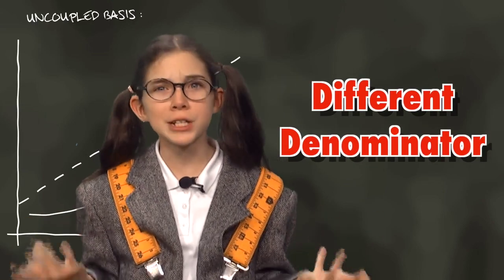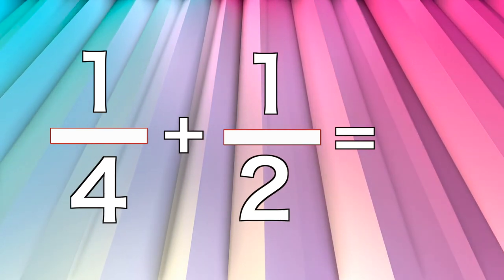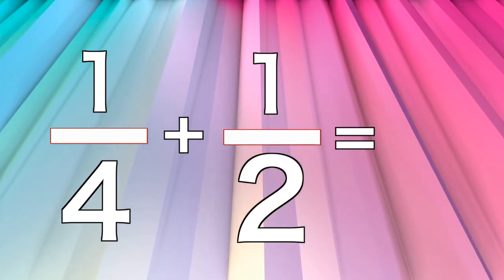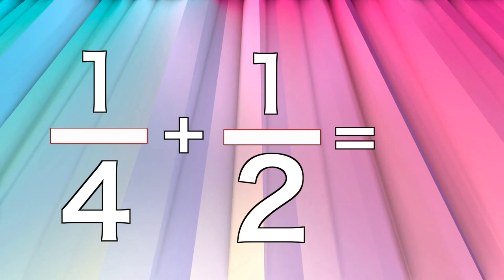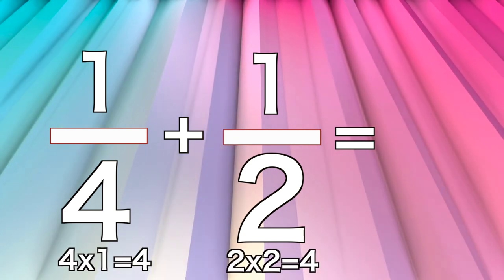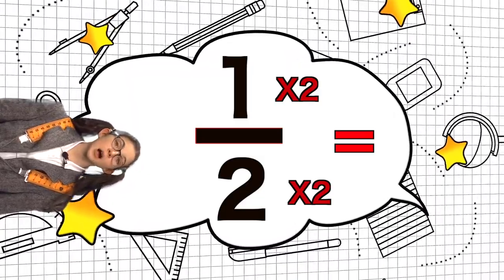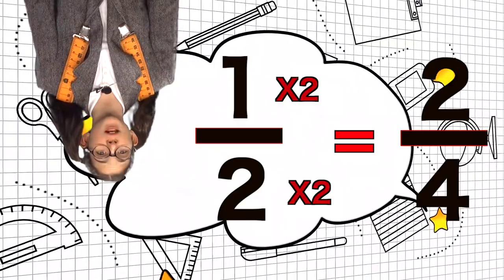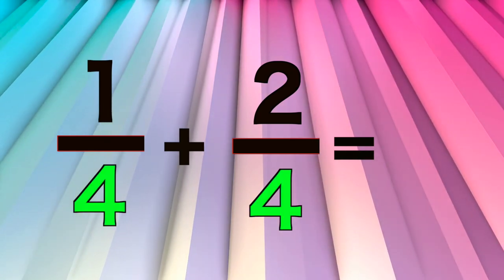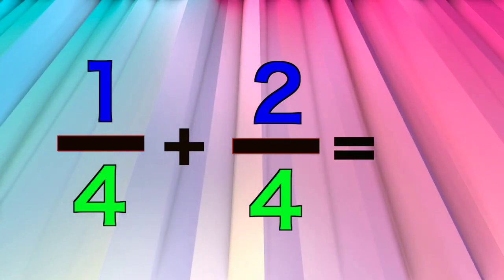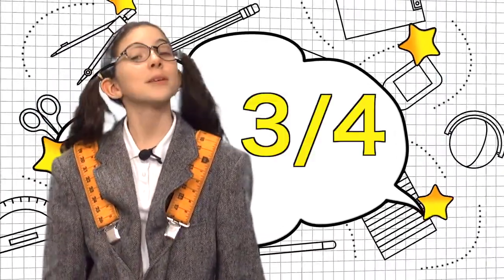But what happens if you have denominators that are different, such as one-fourth plus one-half? All you have to do is make it easy by giving them a common denominator. In this problem, the common denominator is four, because four is a multiple of both four and two. For one-fourth, we keep it the same. For one-half, we multiply two times two to get the common denominator four, and also multiply the numerator by two, getting two. So now we have one-fourth plus two-fourths. Since the denominators are the same, we add the numerators: one plus two equals three. So our answer is three-fourths. Great job — three-fourths!